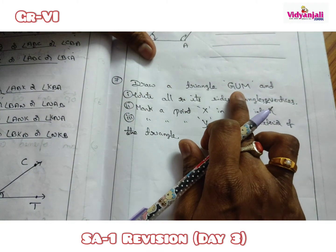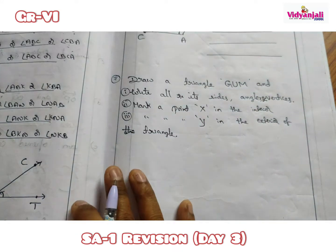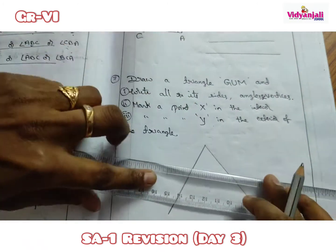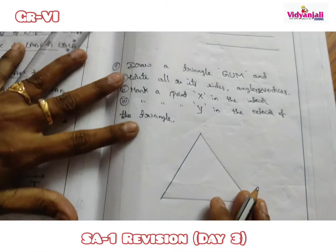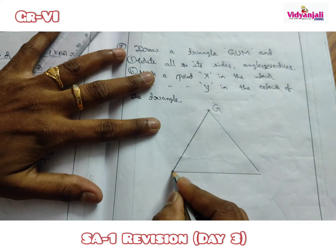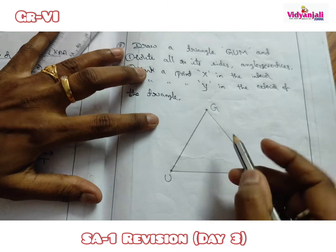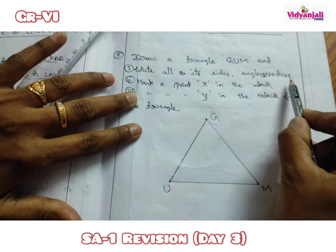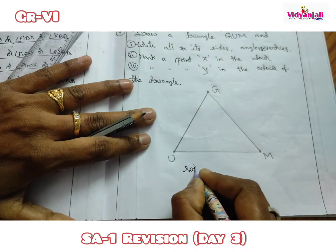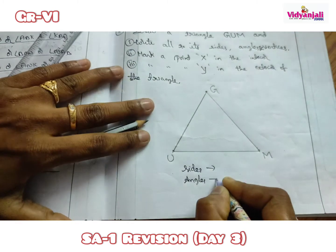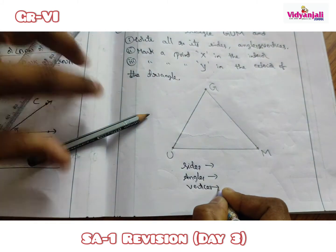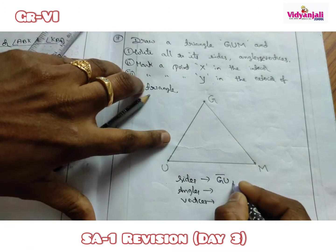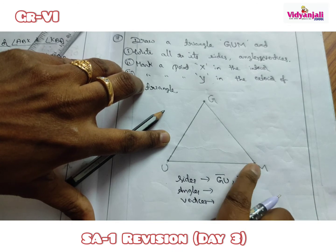Seventh: draw triangle GUM and write all its sides, angles, and vertices. Draw the triangle, label the vertices G, U, and M. The three sides are GU, UM, and MG.